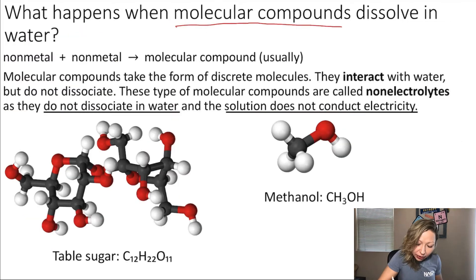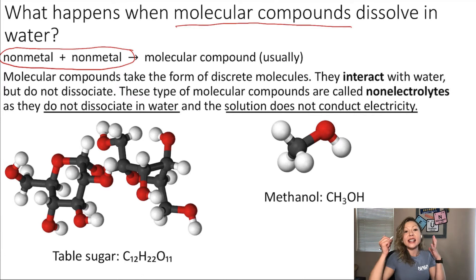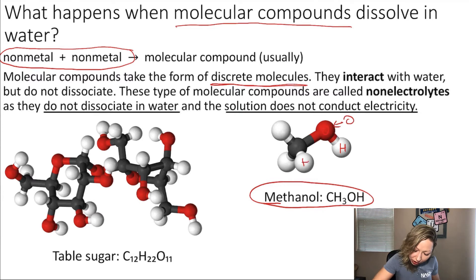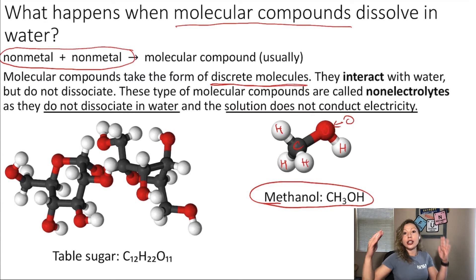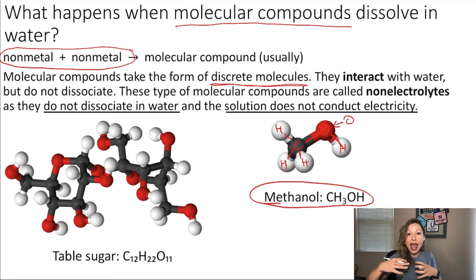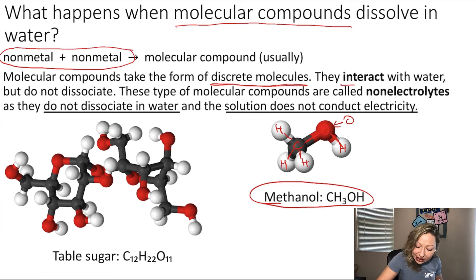What happens when molecular compounds dissolve in water? Molecular compounds generally consist of non-metal atoms and take the form of a discrete molecule. For example, in the case of methanol, you have hydrogen, oxygen, hydrogen, hydrogen, and a carbon atom connected together with covalent bonds. The most important thing is that these compounds do not form ions when they dissolve in water — the bonds stay there the whole time. They simply interact with water and will not dissociate.